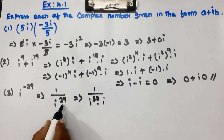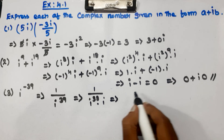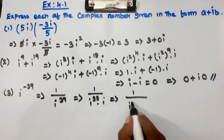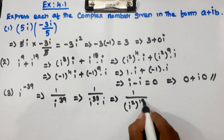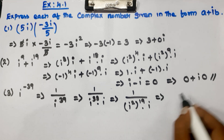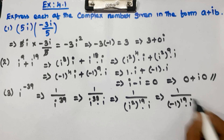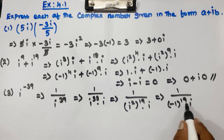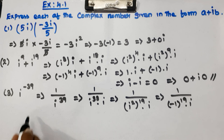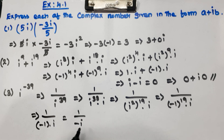i to the power 38 into i equals i to the power 39. So we write 1 by i squared, whole to the power 19 — that's 19 into 2 equals 38 — into i. i squared is minus 1, so we have 1 over minus 1 to the power 19 into i. Minus 1 to an odd power is minus 1, so this becomes 1 over minus 1 into i, which is 1 over minus i.